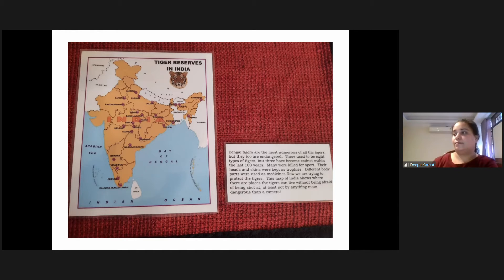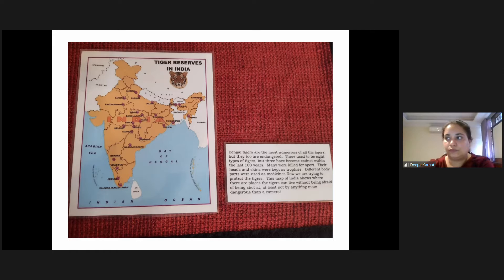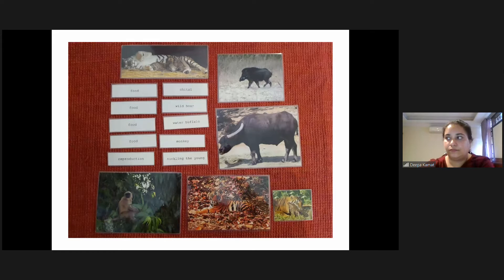Rồi cái hình tiếp theo sẽ là bản đồ của Ấn Độ, thể hiện những nơi có vườn quốc gia — cô gọi nó là những công viên hổ hay khu bảo tồn hổ — ở đó mình sẽ tìm thấy những con hổ Bengal này.